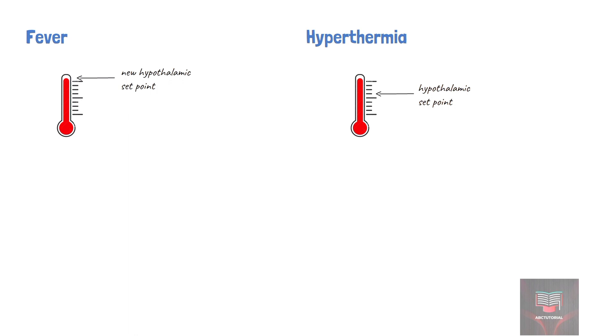Making the distinction between fever and hyperthermia is important as fever can be managed with antipyretic medications, but this has no role in management of hyperthermia, which can be managed with physical cooling such as tepid sponging.